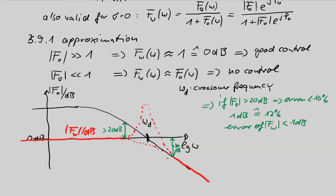The same is true on the other side: if the magnitude is deeper than −20 dB, neglecting the small term also gives less than 1 dB error in the approximation. Note that in typical Bode plot drawings with normal scaling, 1 dB corresponds to about 1 millimeter — so this is a very practical accuracy level.